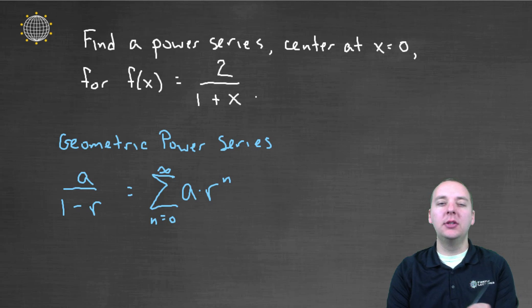So let's remind ourselves what does a geometric power series look like? Well it says if you have a function of the form a over one minus r you can write that as the sum from zero to infinity of a times r to the n.